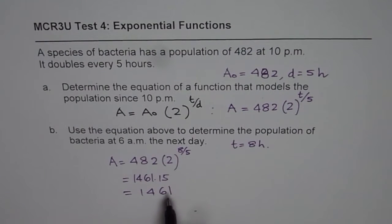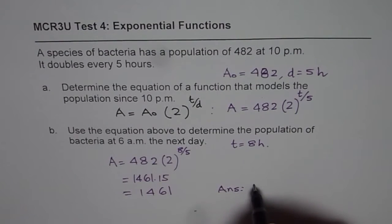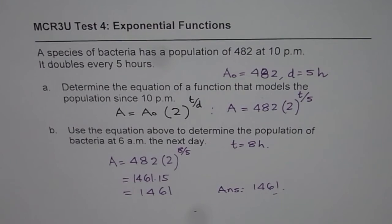So the number of bacteria at 6am are expected to be 1461. So that is how you can solve it. Thank you.